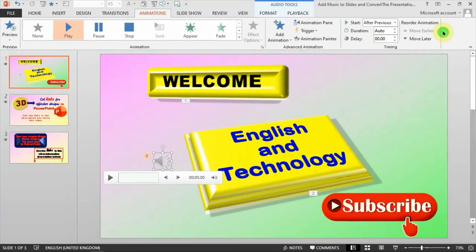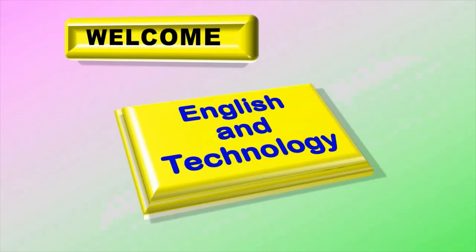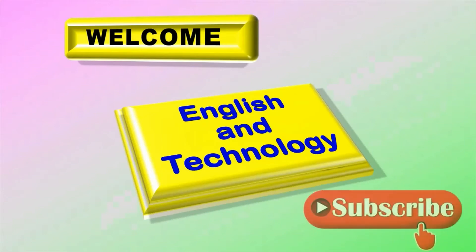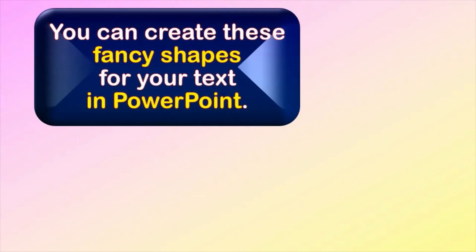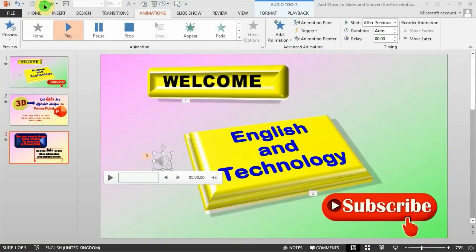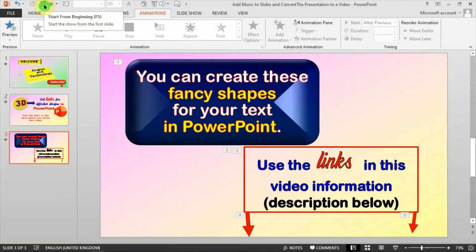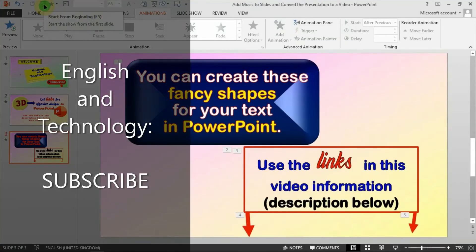We've added the music and it's going to play from the beginning automatically across all the slides. Let's have a feel of how it looks in slideshow mode. Now it's playing. Then you click for the next item to display. You click again, then move to the next slide. So you click each time to advance items. That's how adding music to the slides works.